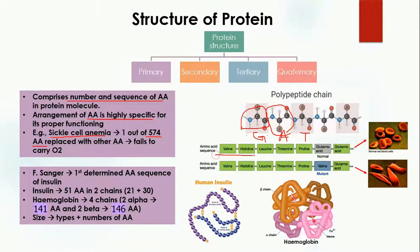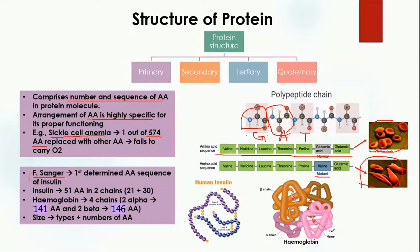Here you can see the primary structure of the amino acids present in hemoglobin. Normal red blood cells are produced, but in sickle cell anemia only one amino acid — glutamic acid — is replaced with valine. Because of this replacement the shape of the red blood cell is changed, showing that the primary structure of amino acids is very important for proper functioning.